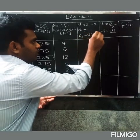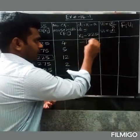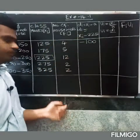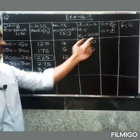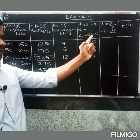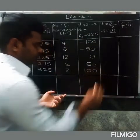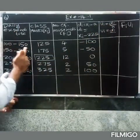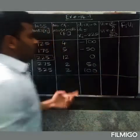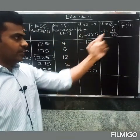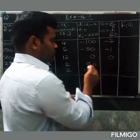We take assumed mean a = 225. So d = xi minus 225: for xi = 125, d = 125 − 225 = −100; for xi = 175, d = −50; for xi = 225, d = 0; for xi = 275, d = +50; for xi = 325, d = +100. Then h = 150 − 100 = 50, and u = d divided by h: giving −2, −1, 0, +1, +2 respectively.